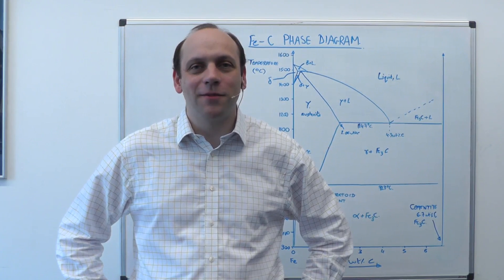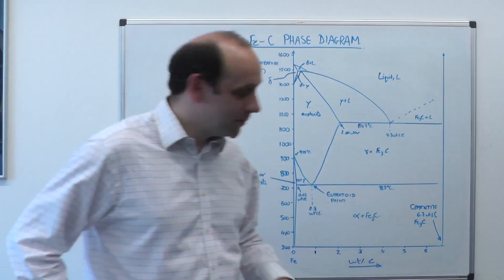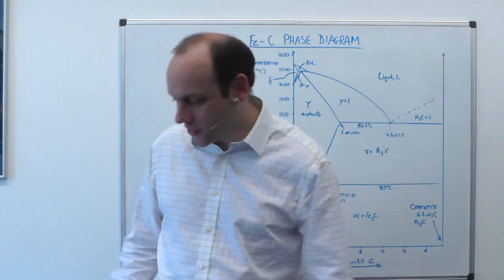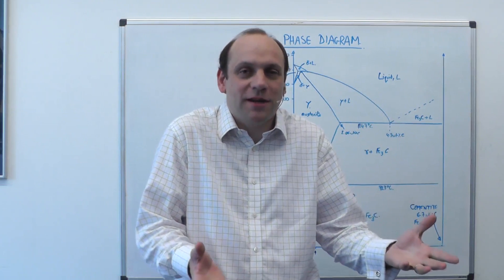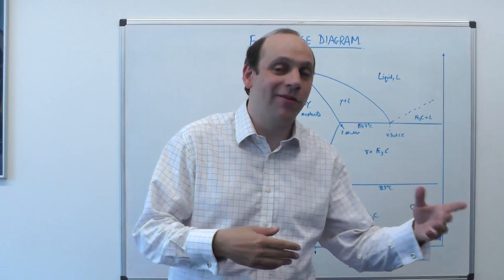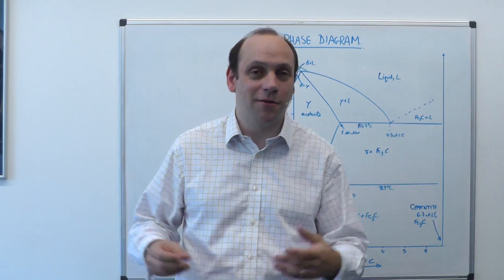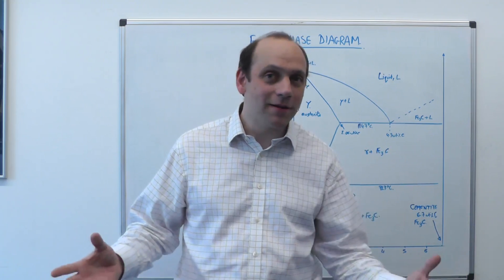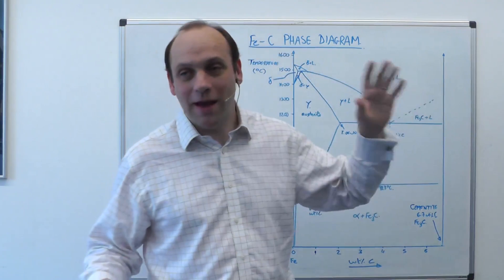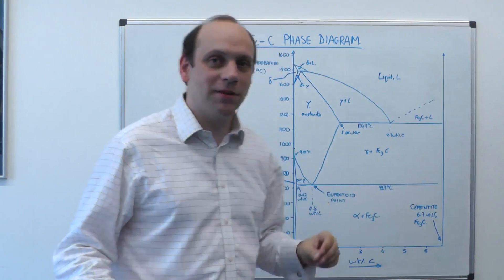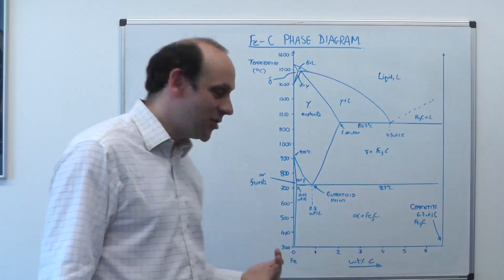This is the second segment of lecture eight, which is about the iron-carbon phase diagram and steels. Most commonly we use steels — the most common engineered material is actually concrete, but the most common material after concrete is steel. Everything from the chair you're sitting on, to your car, to buildings, is made out of steel. Steels are based on the iron-carbon phase diagram; they're alloys of iron with carbon and some other elements. This is what the iron-carbon phase diagram looks like at the iron-rich end.